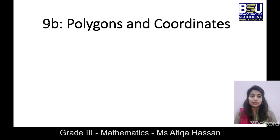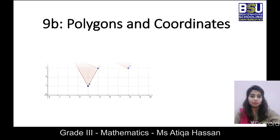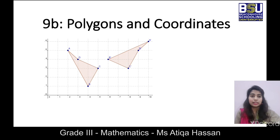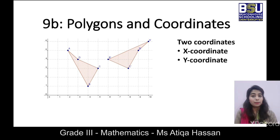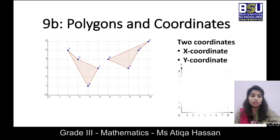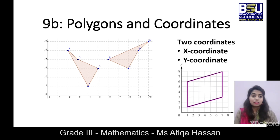Here I have one example as shown in the figure — how polygons are being plotted in the coordinate system. We have basically two coordinates: the x-coordinate and the y-coordinate. Here is another figure in which we have the x-axis and the y-axis, and a polygon is plotted on those two axes.